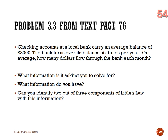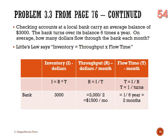We need inventory and flow time to solve for throughput. Inventory is $3,000. The bank turns over six times per year, so flow time is one-sixth of a year, which is two months. Throughput equals inventory divided by flow time: $3,000 ÷ 2 months = $1,500 per month.